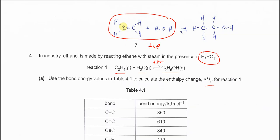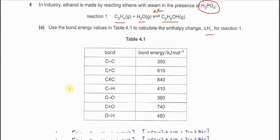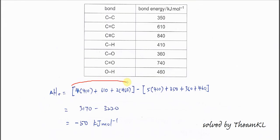You have to count the bonds in the reactants: how many C-H bonds, how many C-C bonds, how many O-H bonds. From the structure, we know there are 4 C-H bonds, 1 C=C bond, and 2 O-H bonds. For the calculation, we put all these in — 4 C-H bonds, 1 C-C bond, and 2 O-H bonds in the reactant part, which is the endothermic part.